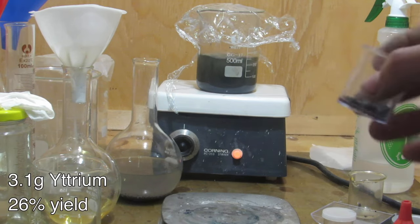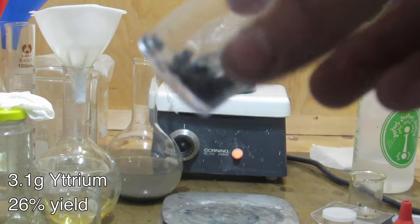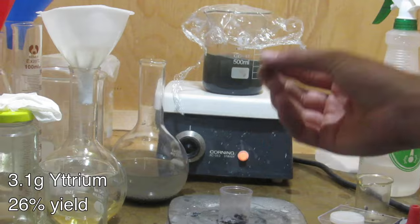In total, we got 3.1 grams of yttrium metal for my element collection, corresponding to a 26% yield based on the 15 grams of yttrium oxide that dissolved from the fluorescent phosphor.